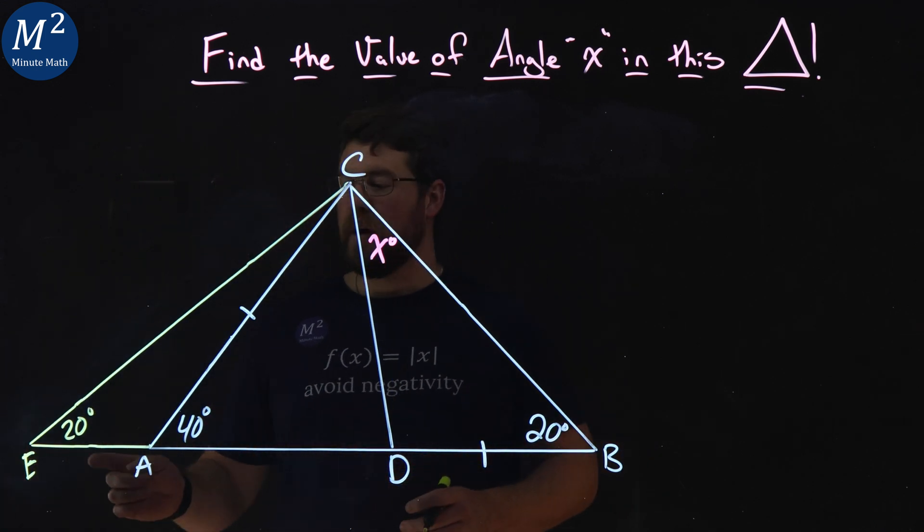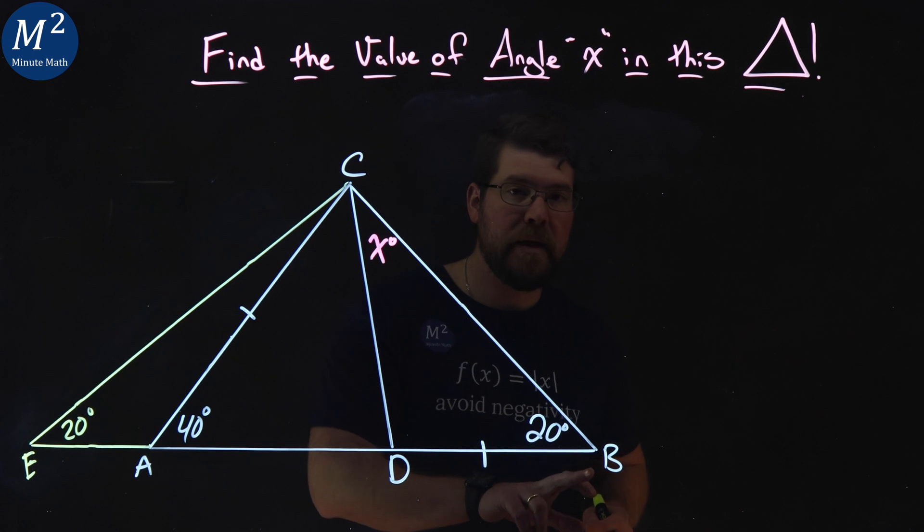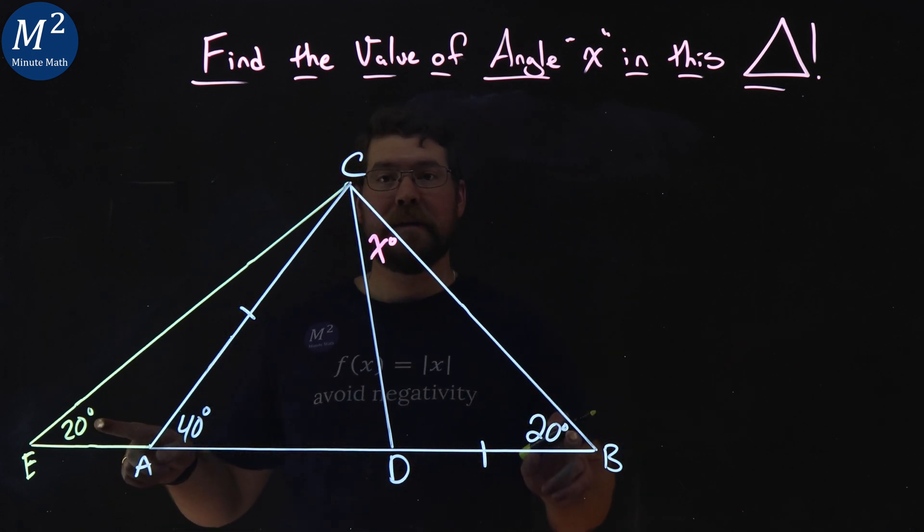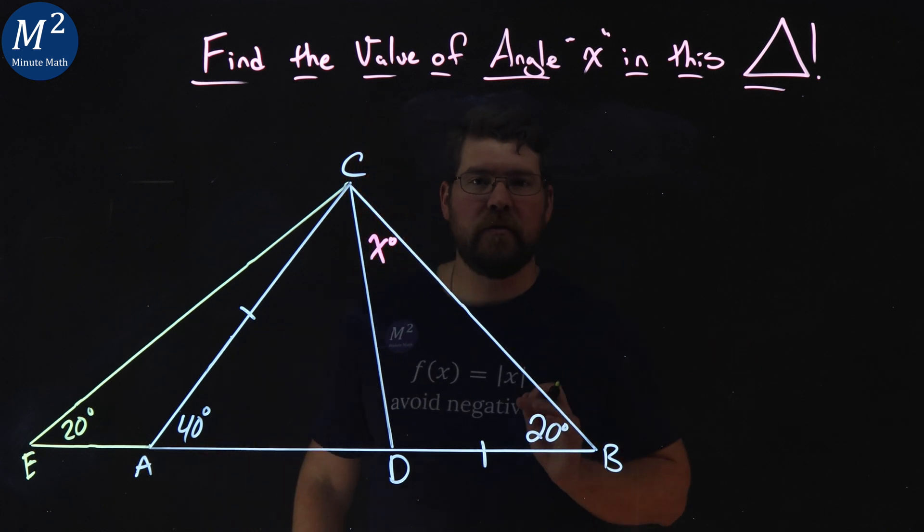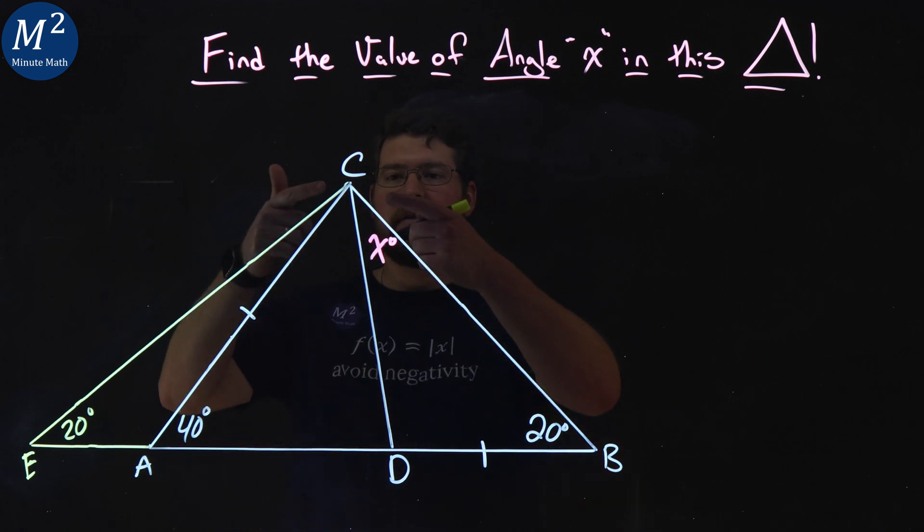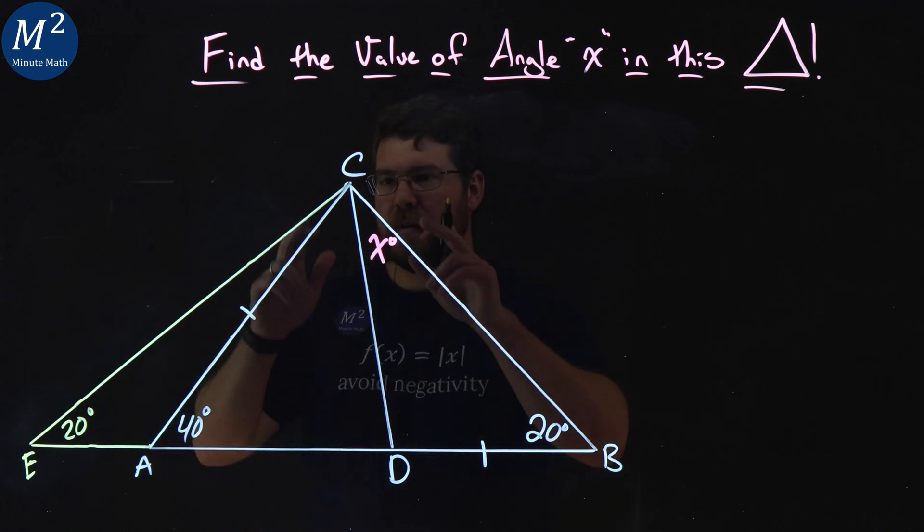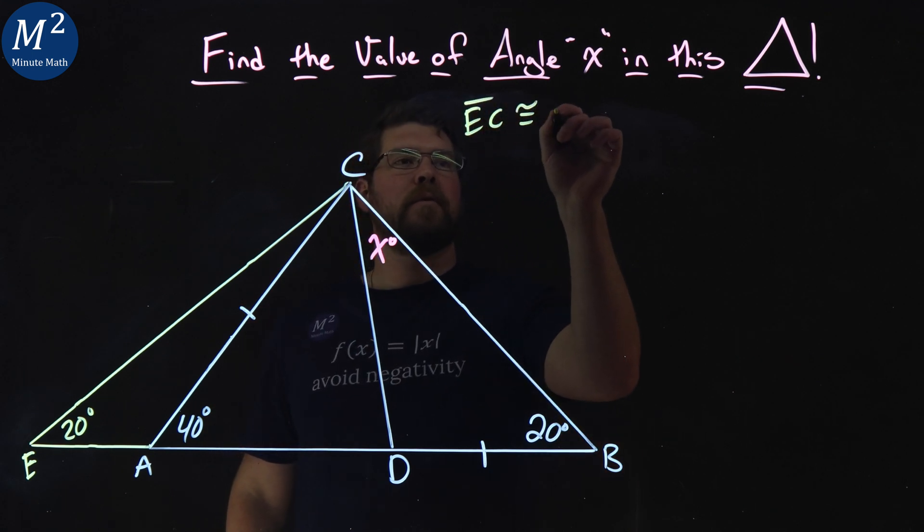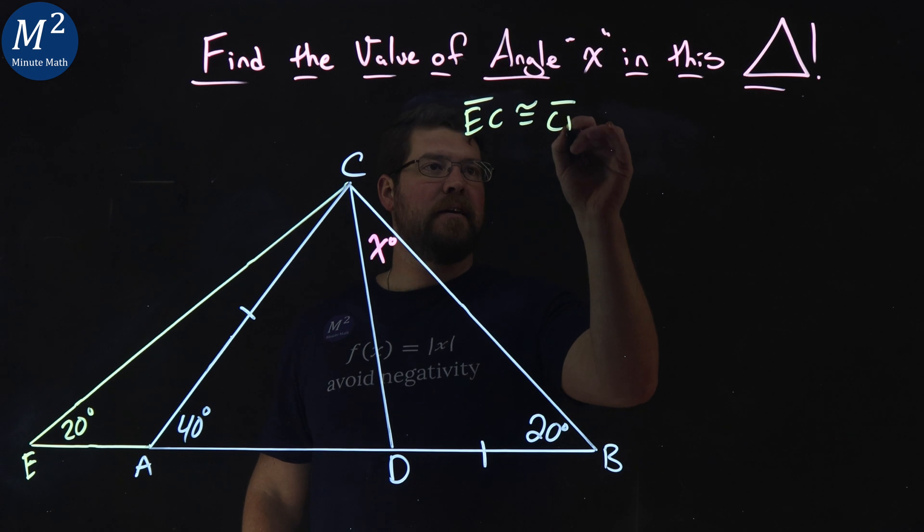What this tells us now about triangle ECB, it's an isosceles triangle. We have 20 degrees here and 20 degrees here. Isosceles triangles means their side lengths are congruent to two side lengths, so EC is congruent to side length CB.